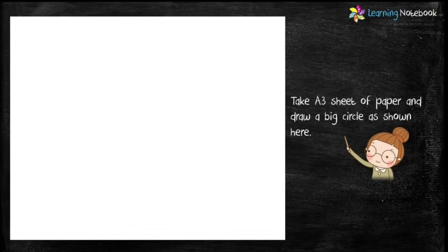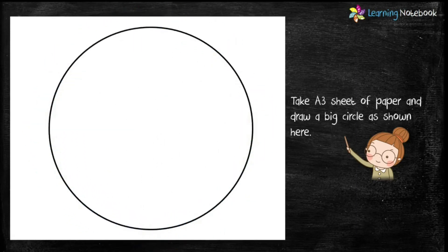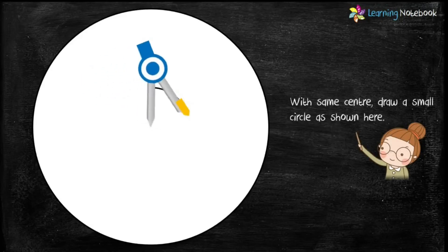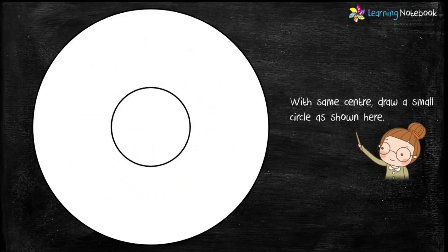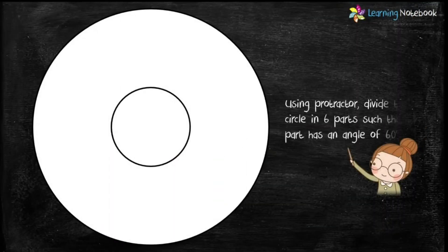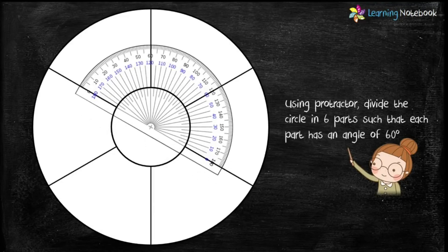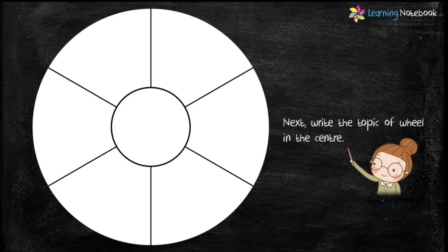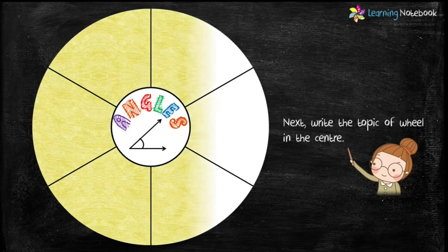So now students we have revised the six types of angles, so let's start with the activity. Take an A3 sheet of paper and draw a big circle, then carefully cut it out with scissors. Next, with the same center, draw a small circle. Using a protractor, divide the circle into six parts such that each part has an angle of 60 degrees. Write the topic 'Angles' in the center and color the rest of the sheet with your favorite color.